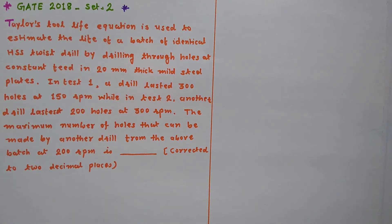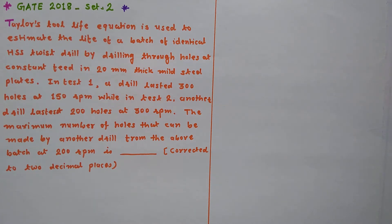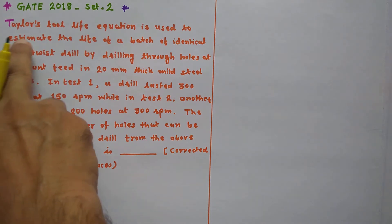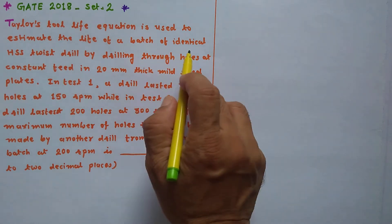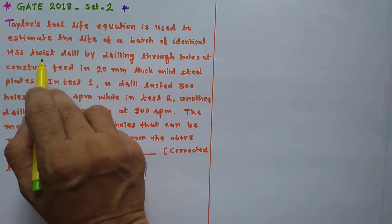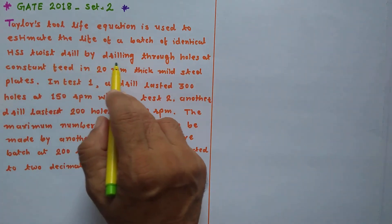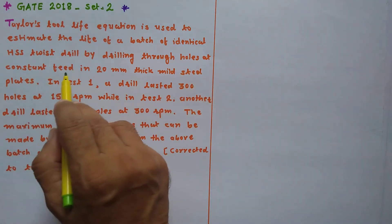Welcome, dear friend, to the Study Buddy channel. I'm Professor Case Banker, and I'm going to take this GATE example from 2018, set number two, on the Taylor tool life equation. The Taylor tool life equation is used to estimate the life of a batch of identical HSS twist drills by drilling through holes at constant feed in 20 mm thick mild steel plates.